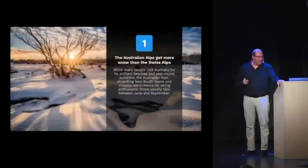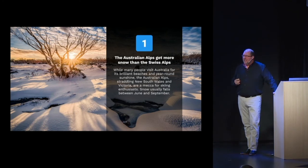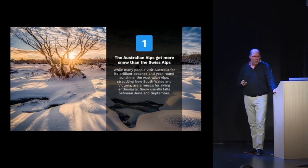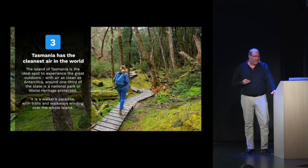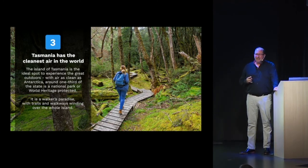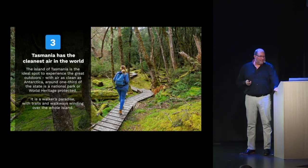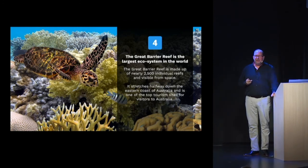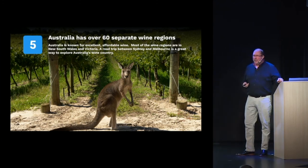Did you know that the Australian Alps actually get more snow than the Swiss Alps? It's quite true — they get a larger amount of snow accumulation and are a mecca for skiing enthusiasts. Ninety percent of Australians live on the coast. Tasmania has the cleanest air in the world. The Great Barrier Reef is visible from space, is the largest ecosystem in the world, and is comprised of over 2,500 other reefs. Australia has over 60 separate wine regions.